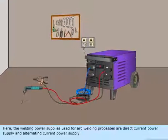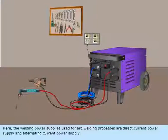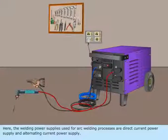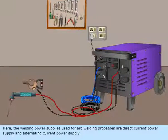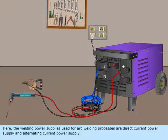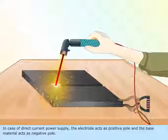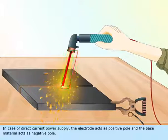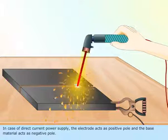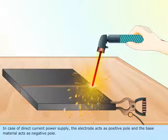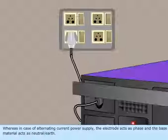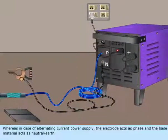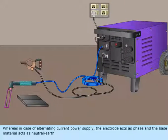The welding power supplies used for arc welding processes are direct current power supply and alternating current power supply. In case of direct current power supply, the electrode acts as positive pole and the base material acts as negative pole. Whereas in case of alternating current power supply, the electrode acts as phase and the base material acts as neutral or earth.